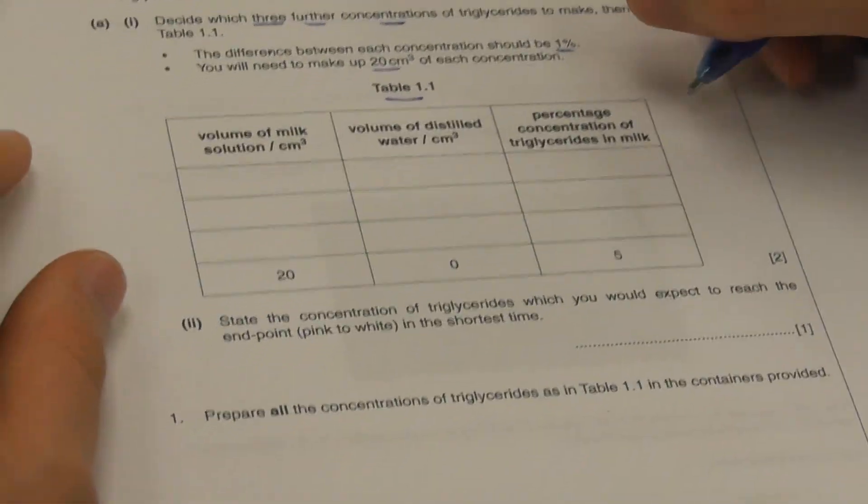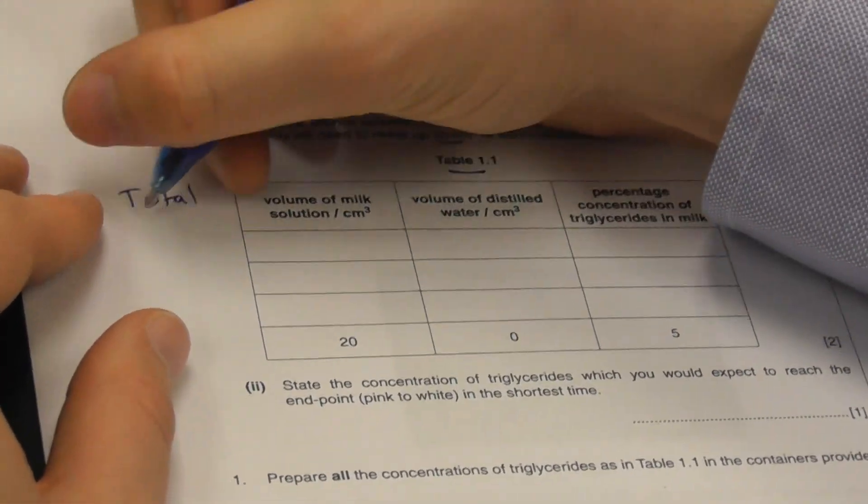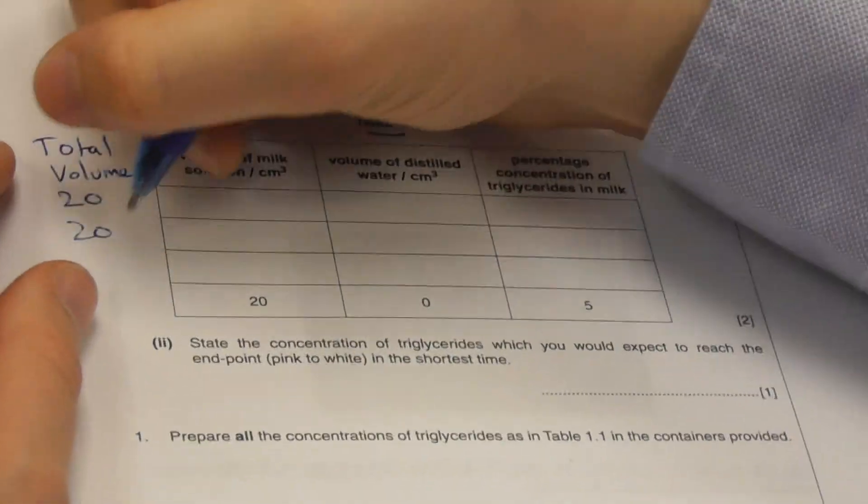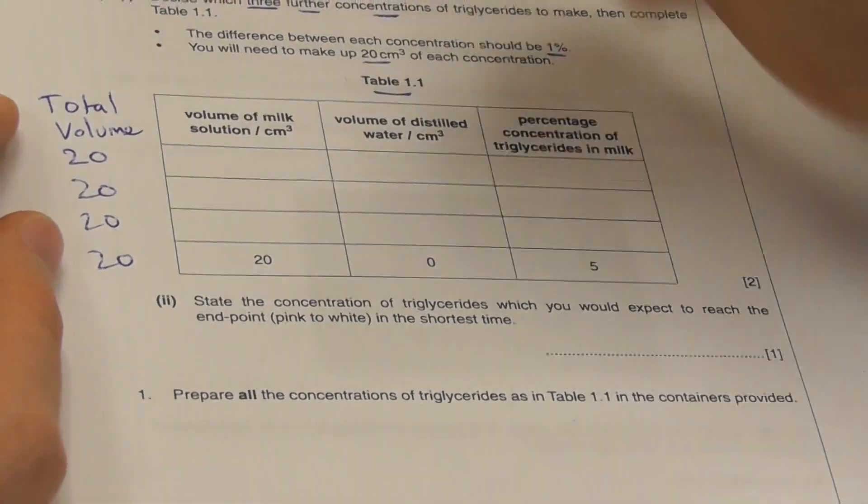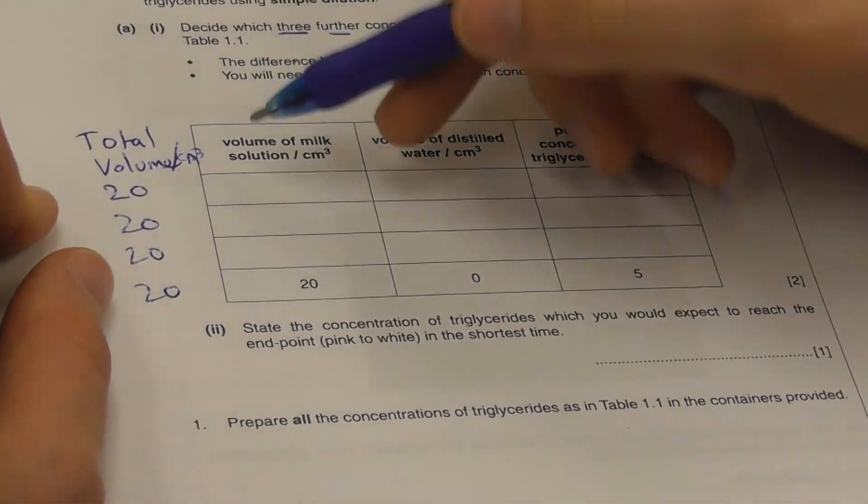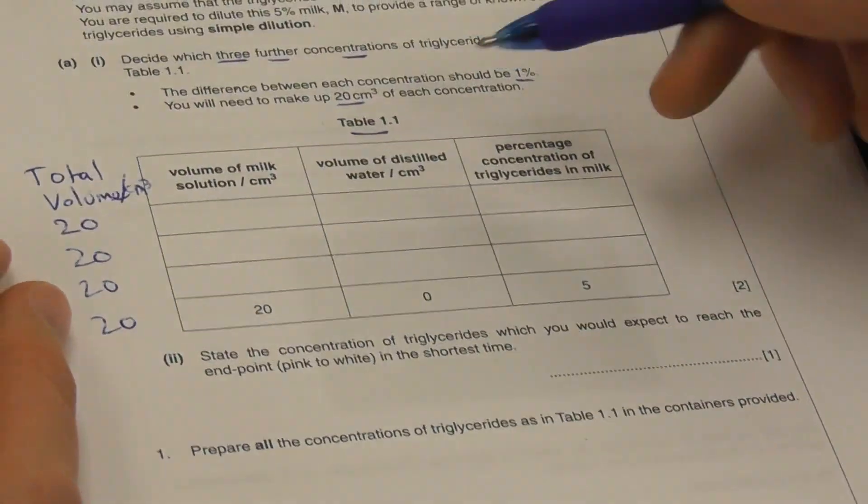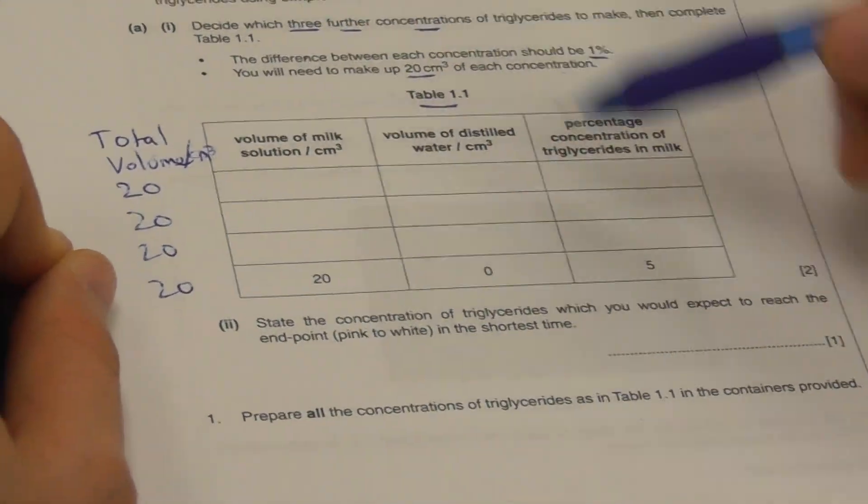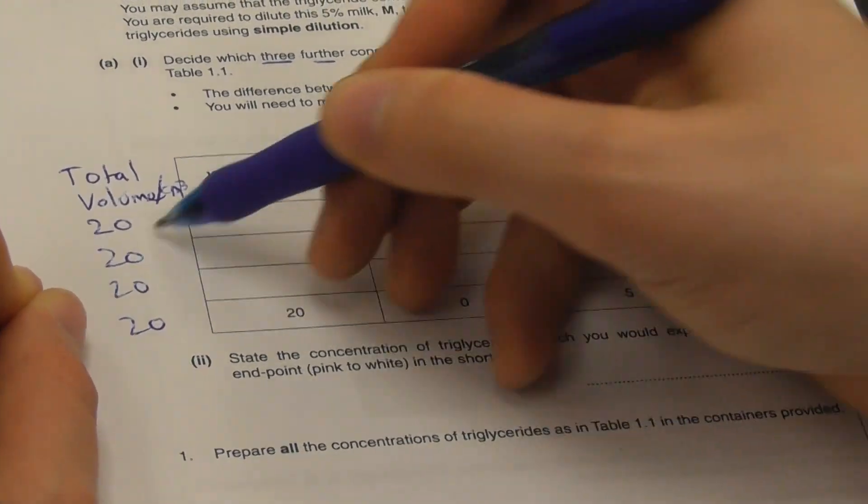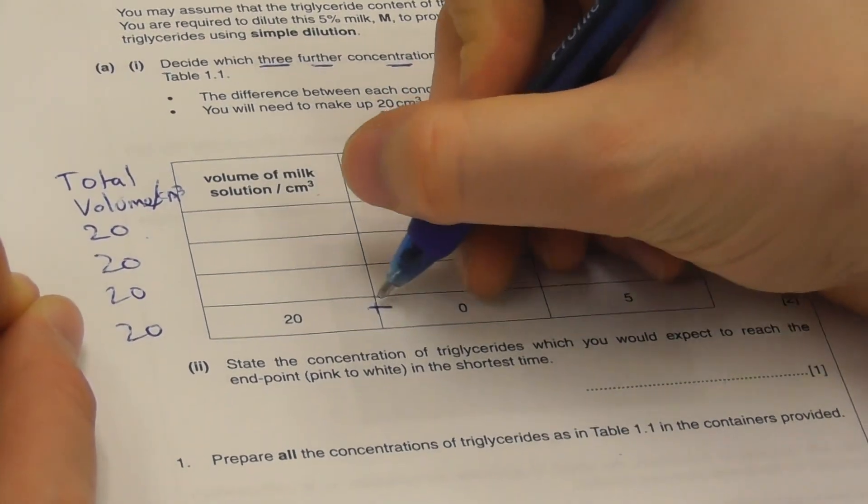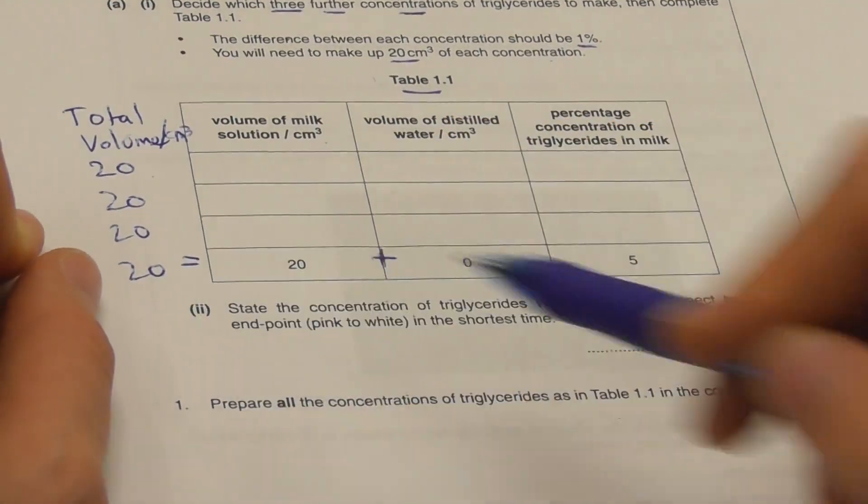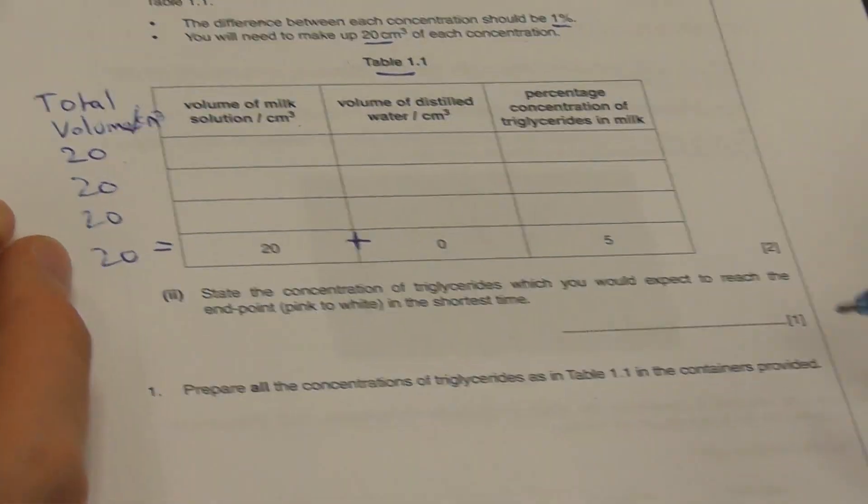That means that our total volume will need to be 20 cubic centimeters for all of our concentrations. All of these will be 20. That means that our volume of milk and our volume of distilled water will add together to equal 20. So 20 plus 0 equals 20. That is correct.